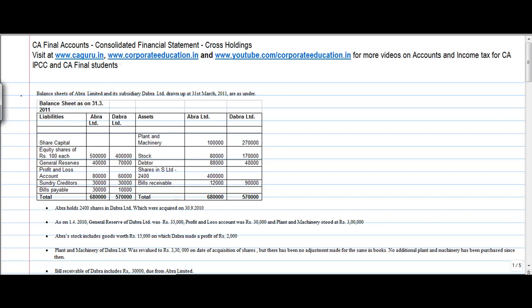Okay, let us see another problem on consolidated financial statements. Balance sheet of Abra Limited and its subsidiary Dabra Limited drawn up as at 31st March 2011 are as under. So you have two companies, one is Abra and the other one is Dabra. What we are told is that Abra is the holding company of Dabra or Dabra is the subsidiary of Abra.